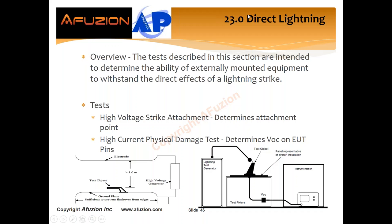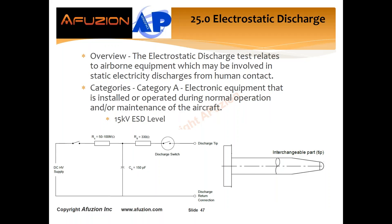Section 25 — ESD or electrostatic discharge — looks at how your airborne equipment handles ESD events from human contact. This is a 15 kilovolt ESD event, but limited: only 150 picofarad capacitance and 330 ohms in series. Because of the series impedance, it is less severe from a damage standpoint than indirect lightning. Any ESD events that might cause a product to fail are similar to susceptibility — in particular radiated susceptibility events where induced voltage might couple onto your lines or your internal product.